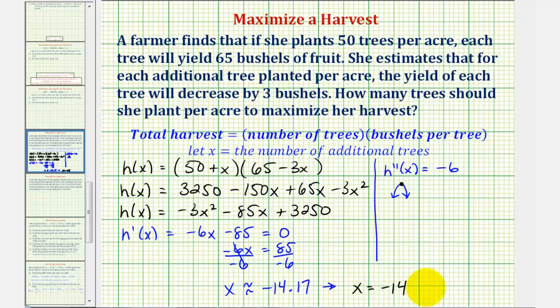at approximately x equals negative 14. But we might be thinking to ourselves, how can x be negative if x is the number of additional trees? Well, the total number of trees is 50 plus x, so the ideal number of trees would be 50 plus negative 14, or 36 trees per acre.